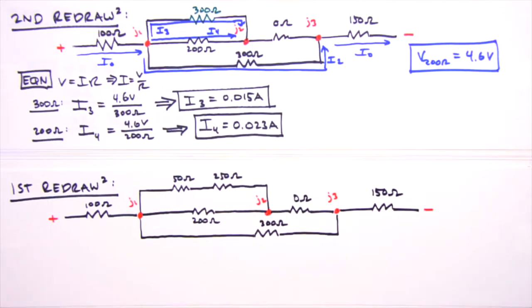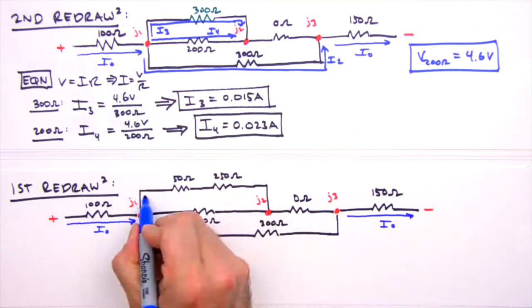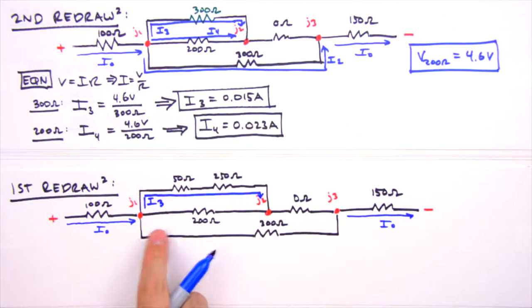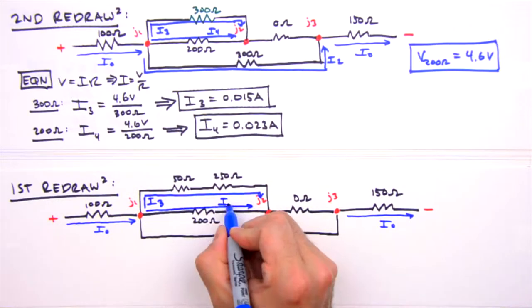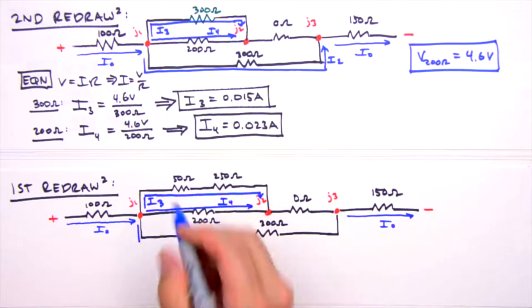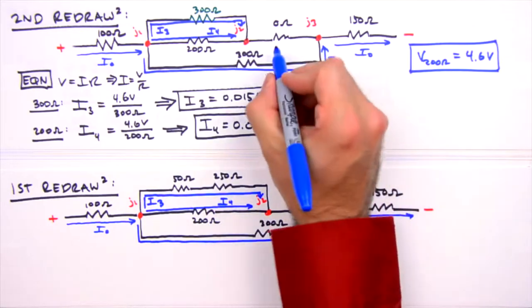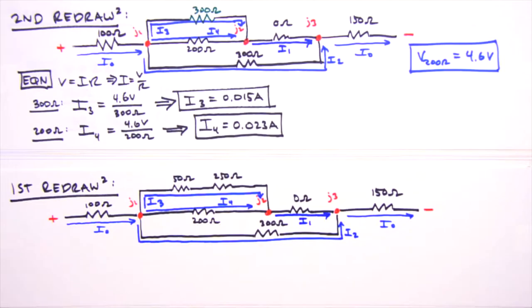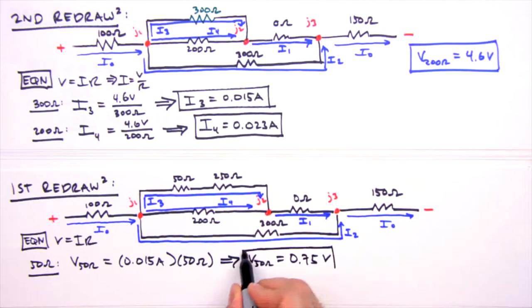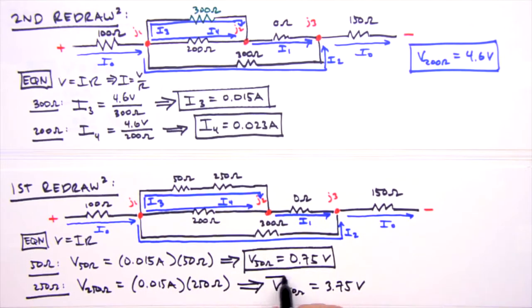Okay, I0 hasn't changed, so we'll draw that first. The current through this top leg containing the 50 ohm and 250 ohm resistors, that's I3 here. And the 200 ohm resistor is associated with I4. The current through the bottom leg, that's I2. And it looks like we forgot to label the current through the dummy resistor in our last redraw. That's just I1. So the final pieces of our circuit puzzle are the voltages across the 50 ohm and 250 ohm resistors. Again, it's just Ohm's law using the known current through the resistors, in this case 0.015 amps, which yields a voltage of 0.75 volts for the 50 ohm resistor and 3.75 volts for the 250 ohm resistor.